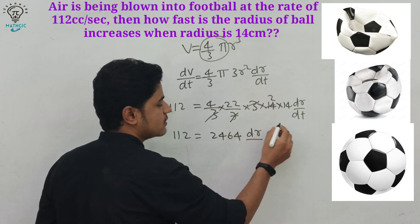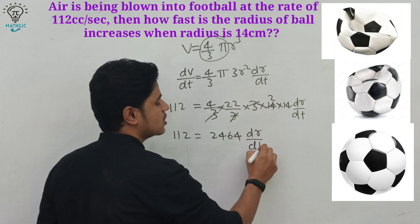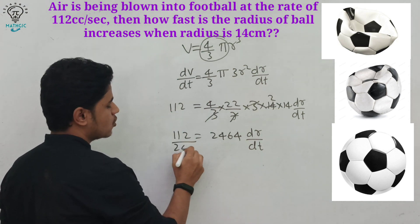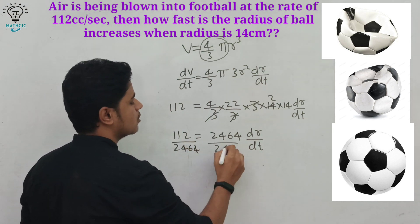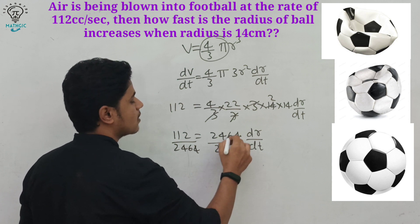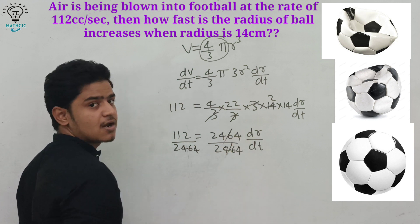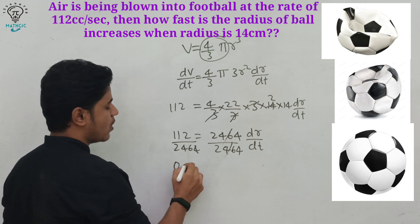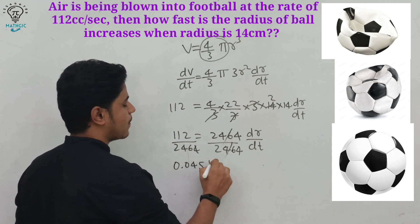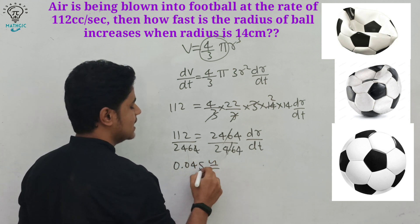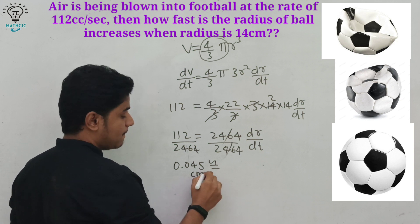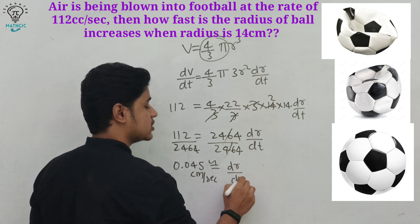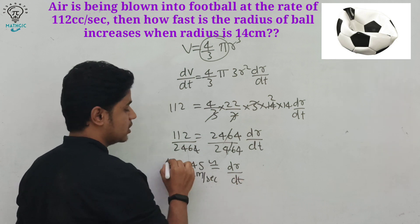Dividing both sides by 2464, we get dr/dt = 112 ÷ 2464 ≈ 0.045 centimeters per second. This is the change of radius with respect to time.